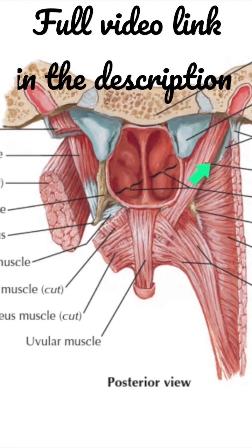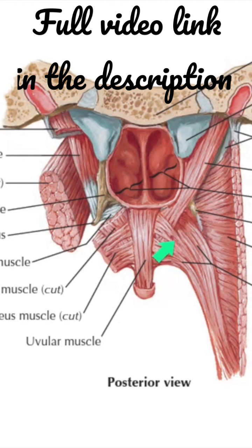The levator veli palatini muscle also takes origin from the carotid sheath and from the medial lamina of the cartilaginous part of the auditory tube. Each muscle passes downward through the sinus of Morgagni, above the superior constrictor muscle, and is inserted into the upper surface of the palatine aponeurosis, in between the anterior and posterior fasciculi of the palatopharyngeus muscle.